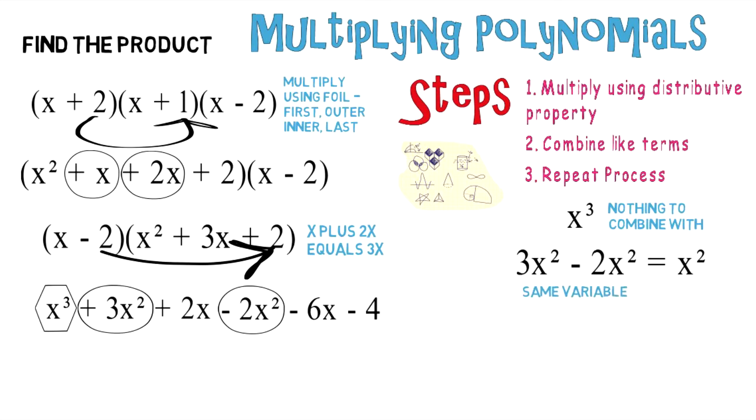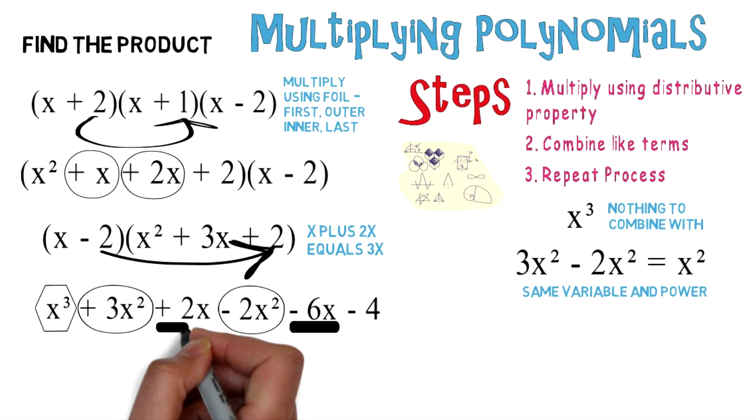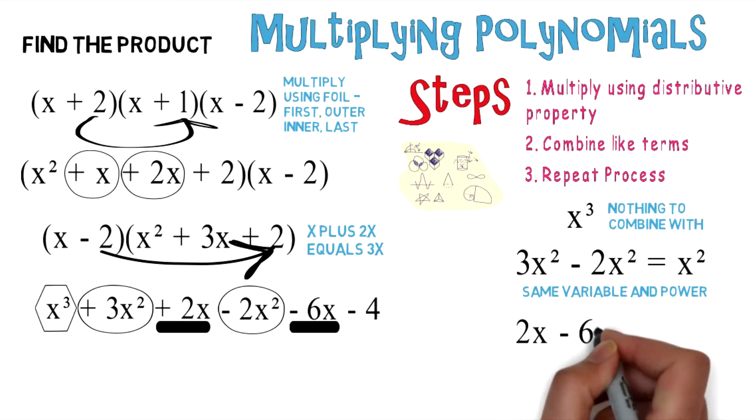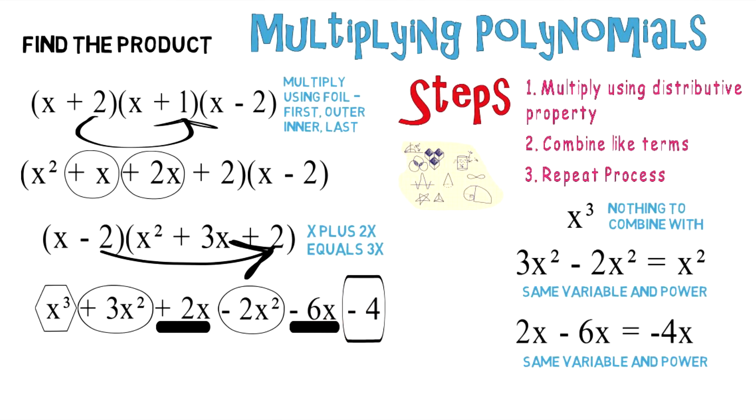You can combine them because they're the same variable and power. Let's identify more like terms. We have 2x and -6x, which gives us -4x. Again, they're the same variable and power. What's left over is -4.